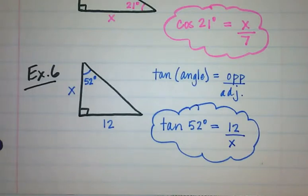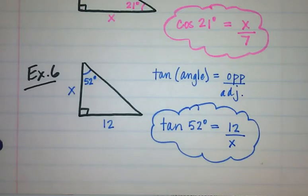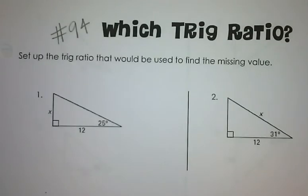I want you to pick up worksheet number 94 if you haven't already. On this worksheet you will be looking at which trig ratio you need to use to set up the equation for each triangle. I'm going to work through a few of them with you, and then you can work on the rest and check back to get the answers.